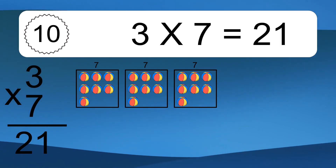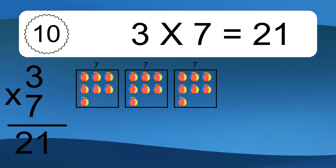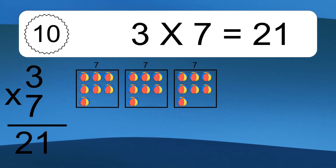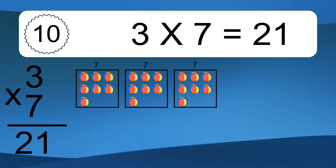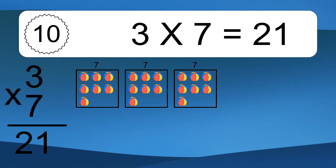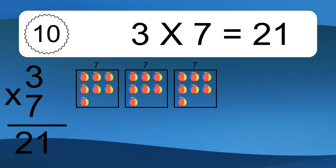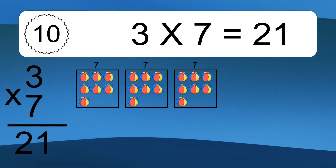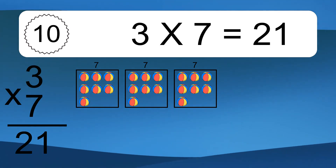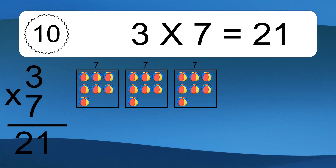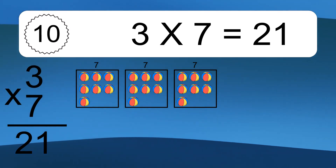3 times 7 equals what? We have 3 boxes, and each box has 7 colorful balls inside. If you count all the balls in all the boxes together, you will have 3 times 7 balls. This equals 21 balls.